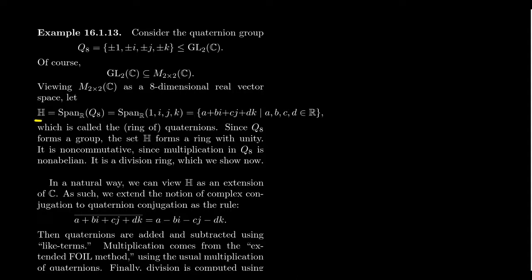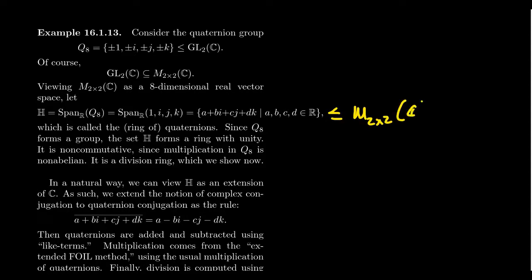This is often referred to as the ring of quaternions, or sometimes the Hamiltonian ring, named after Hamilton, who first discovered the quaternion group. He was so excited about it, he vandalized a bridge with his discovery of the quaternions. The quaternion group forms a spanning set for this subspace, so it's closed under addition and closed under scalar multiplication. The multiplication of this ring is just the same multiplication of the complex matrices, and you can show that this is a subring of M₂×₂(ℂ) — that is, this subspace H is closed under multiplication.